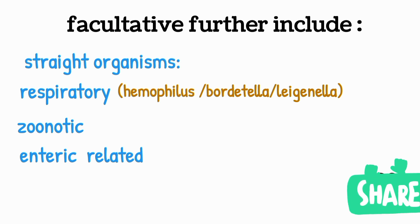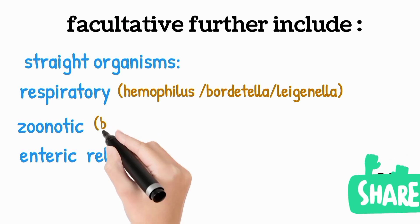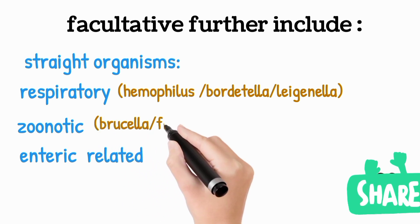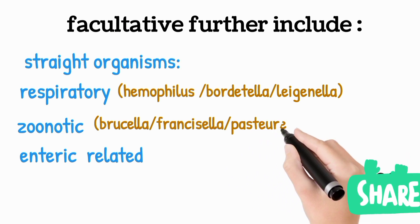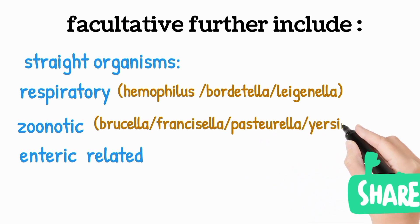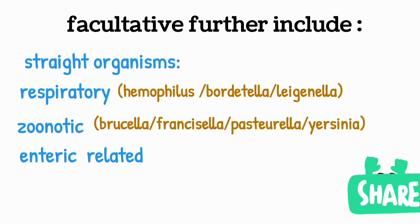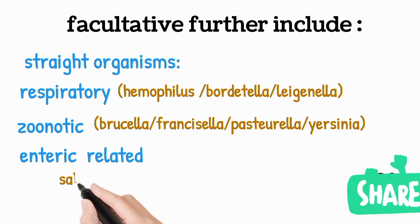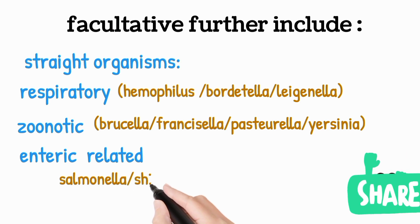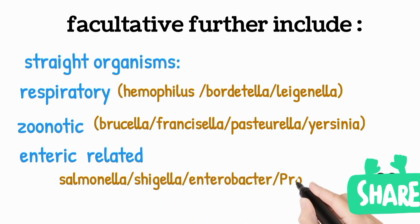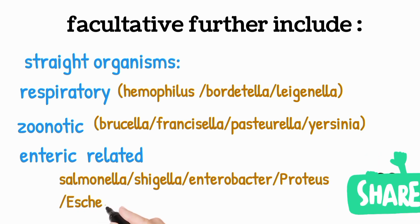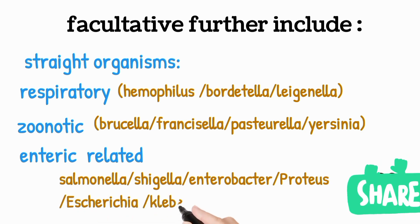Zoonotic organisms are related to animal sources and examples include Brucella, Francisella, Pasteurella, and Yersinia. Enteric-related organisms are related to the gastrointestinal tract and examples include Salmonella, Shigella, Enterobacter, Proteus, Escherichia coli, and Klebsiella.